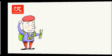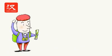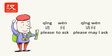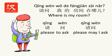To be polite, we always add 请问 before the sentence. 请 means 'please' and 问 means 'to ask,' so 请问 means 'may I ask.' So we can say 请问我的房间在哪儿? 在前面. Another example: 请问我的书在哪儿? 在桌子上.